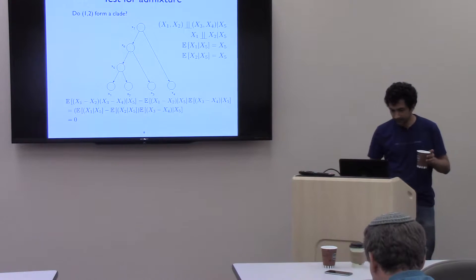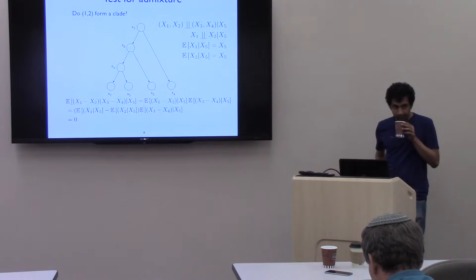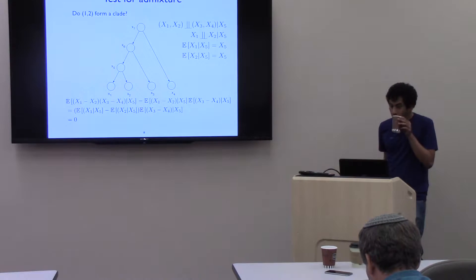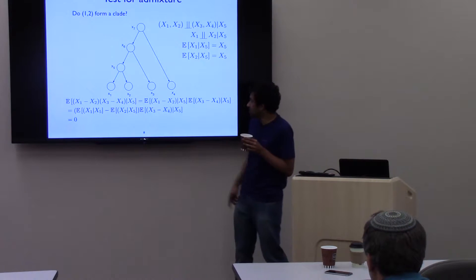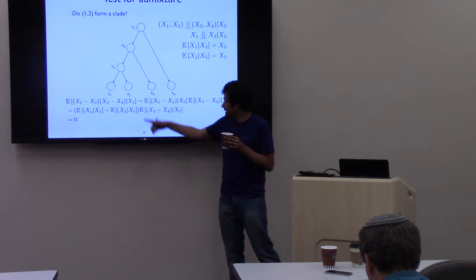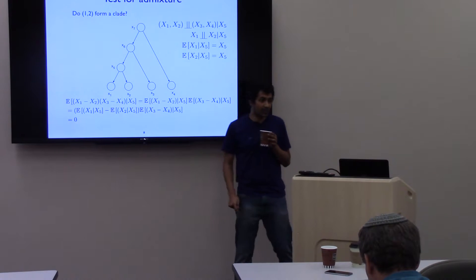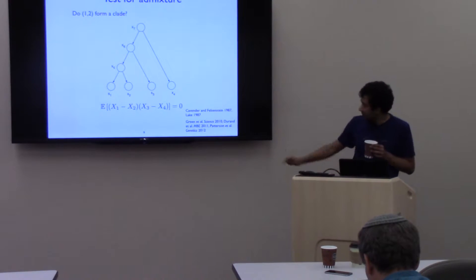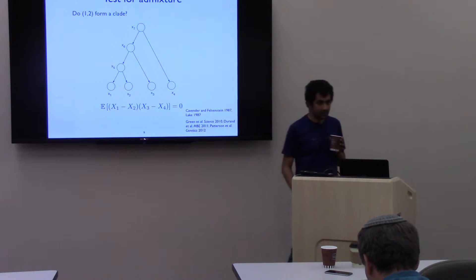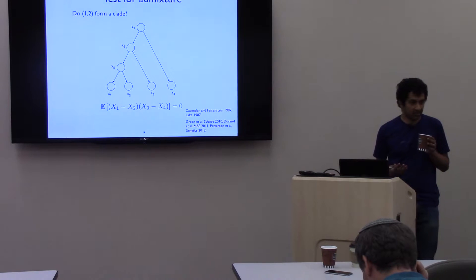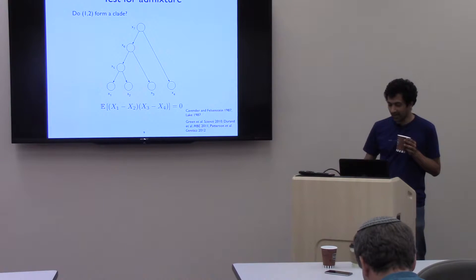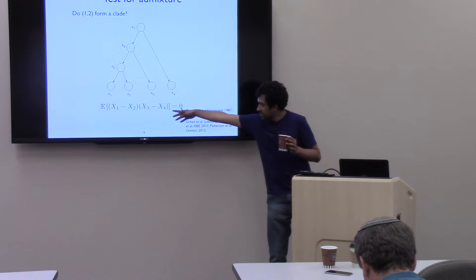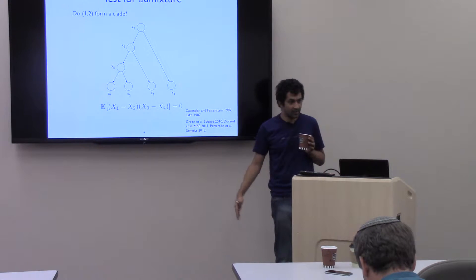Question from the audience: would this still be true if you condition on x6? Response: No, this would not necessarily be true. But conditioning on x5 and then taking the expectation over x5, the final expression is this quantity. You can condition on any of the internal nodes — you're just doing iterated expectation or the tower property, writing this as the expectation of the previous quantity conditioned on x5.